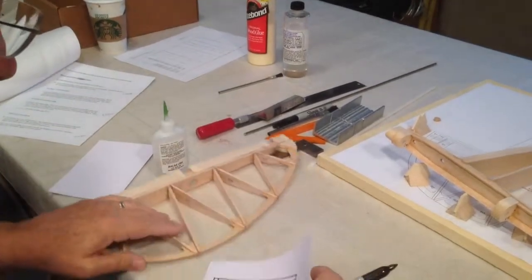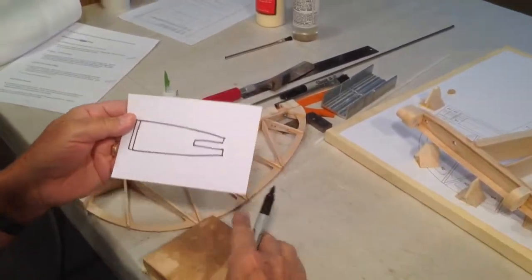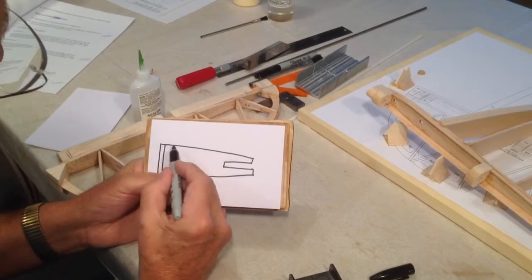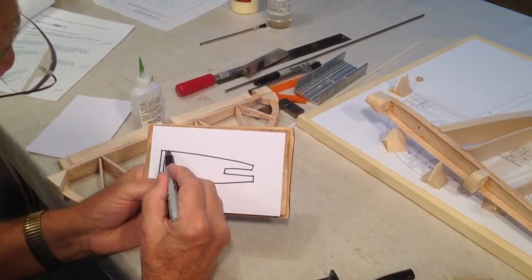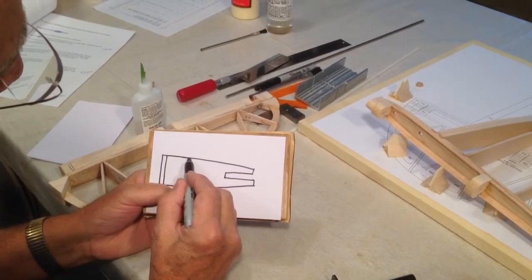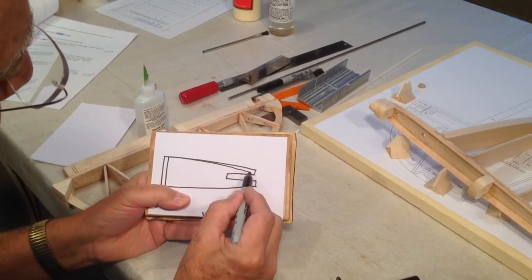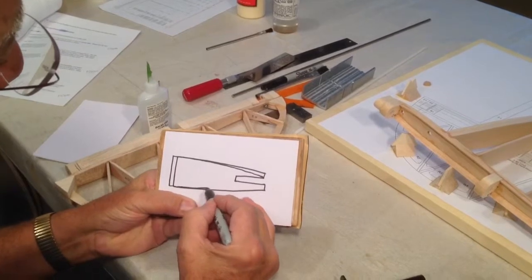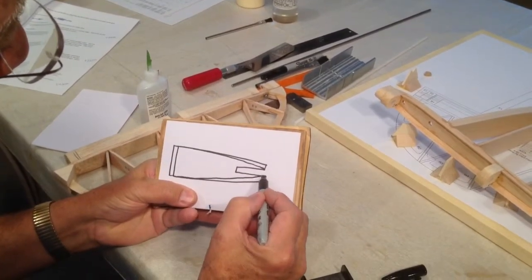But what we're going to do is, here, I'll just do it this way. We're going to plane and then sand down this rib so that it meets the trailing edge right there.